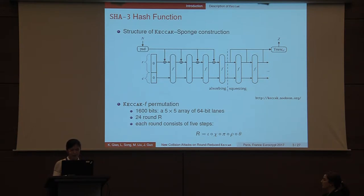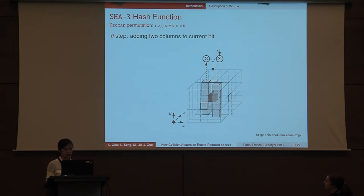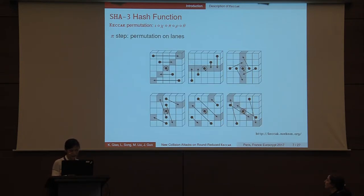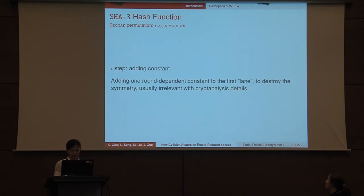There are 24 rounds in the permutation. Each round consists of five steps. The state is usually illustrated as a three-dimensional array of bits and its lower dimensional sub-arrays can be called slice, row, lane, column as common terminology. The effect of theta step is to XOR the current bit with parities of two columns. The rho step is a lane level rotation. And the pi step is a permutation on lanes. And the chi step is the only nonlinear step. It XORs each bit with a nonlinear function of two bits in its row. It can also be regarded as a 5-bit S-box operating on each row of the state. And the iota step is to add constant to the state.